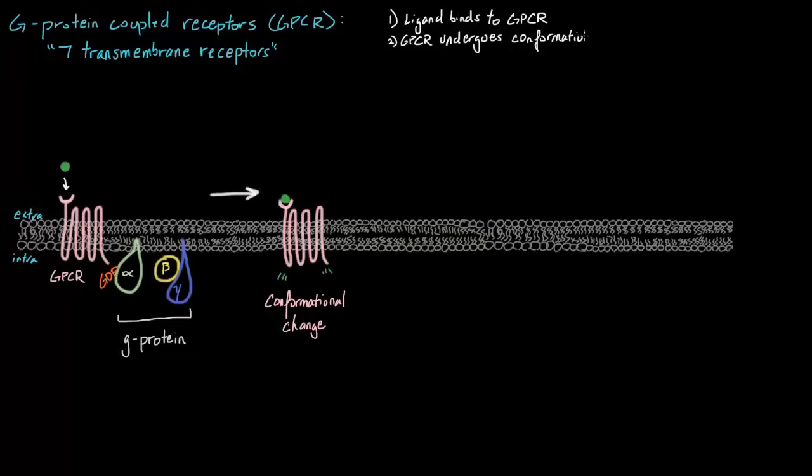What happens next is, because of this conformational change, our alpha subunit, which I'm going to draw in here, is actually going to exchange this GDP for GTP. So, just to keep track, step three, our alpha subunit exchanges GDP for GTP. So, the molecule is swapped out.